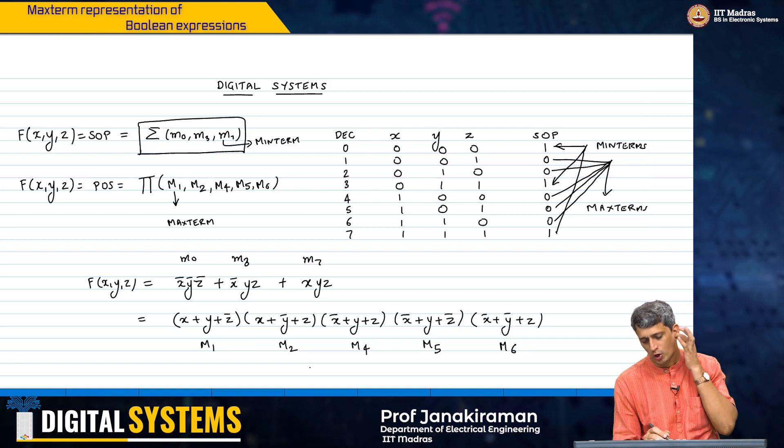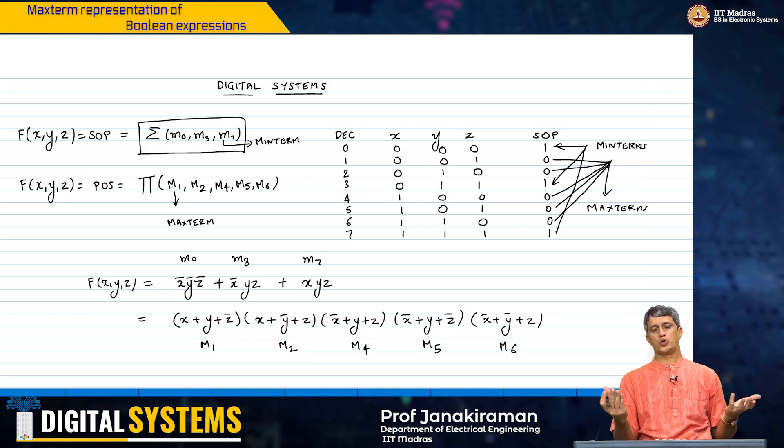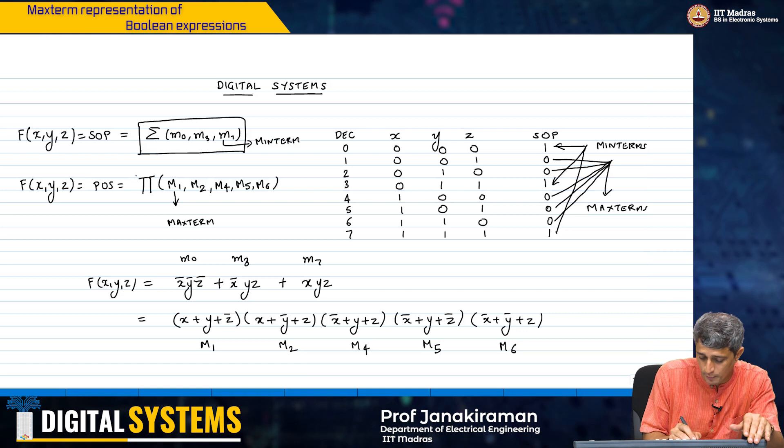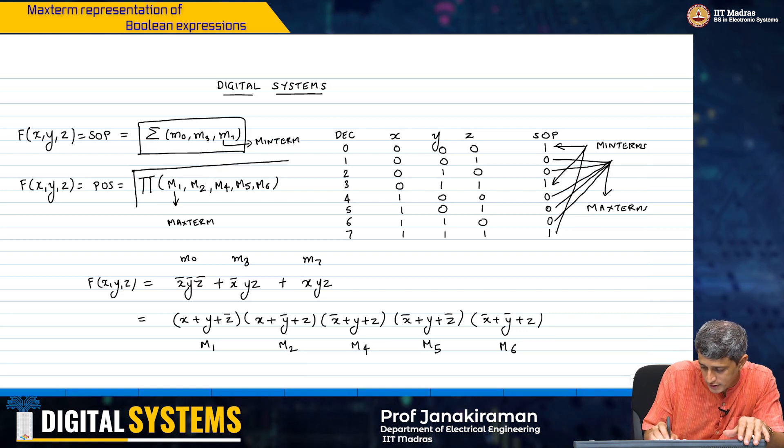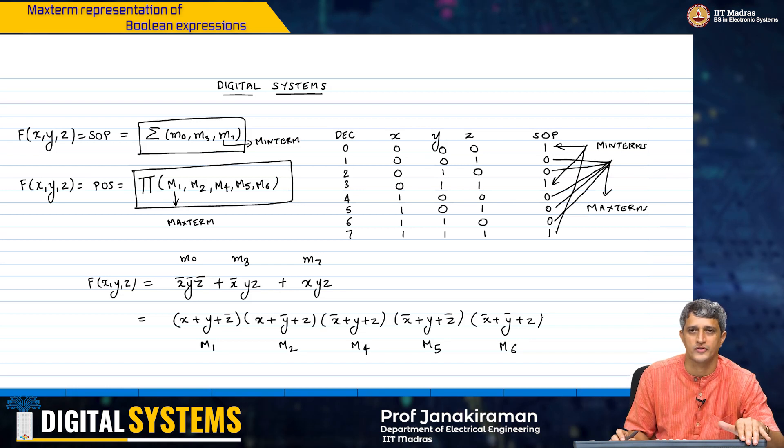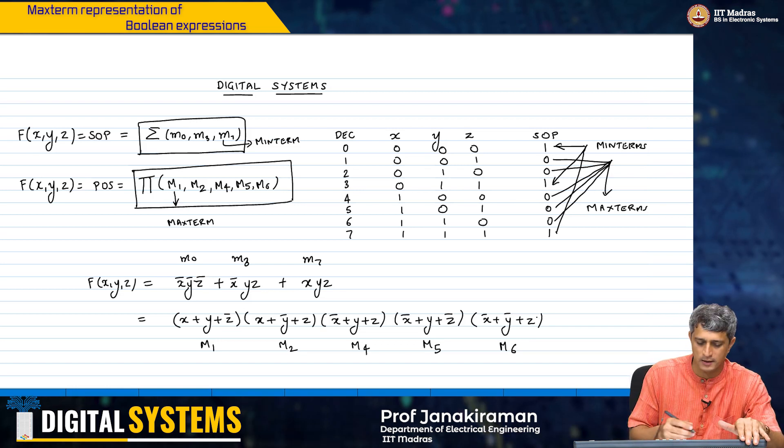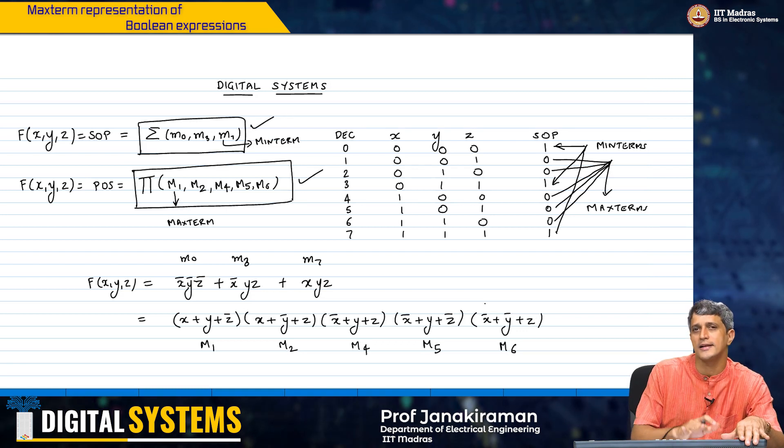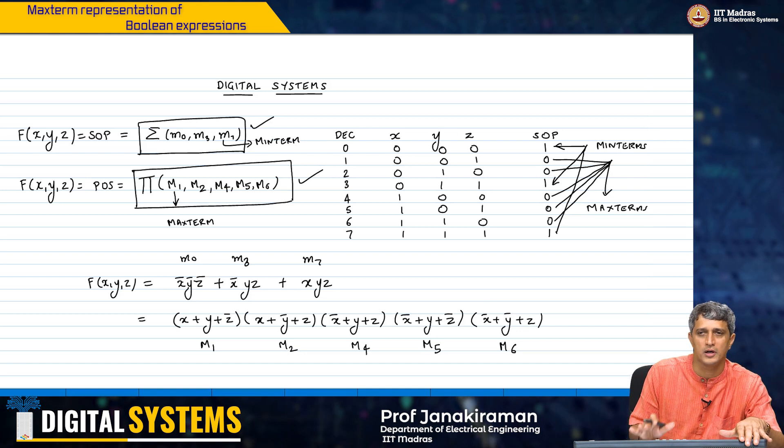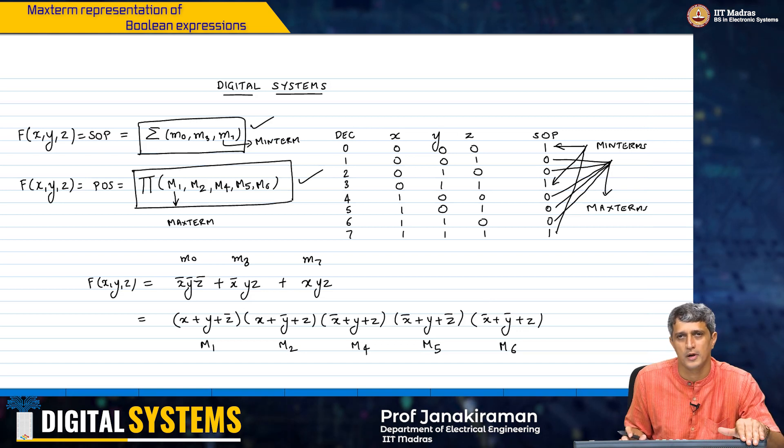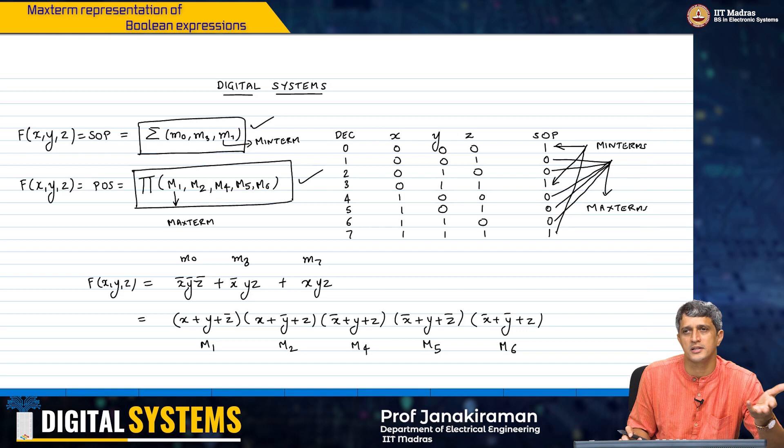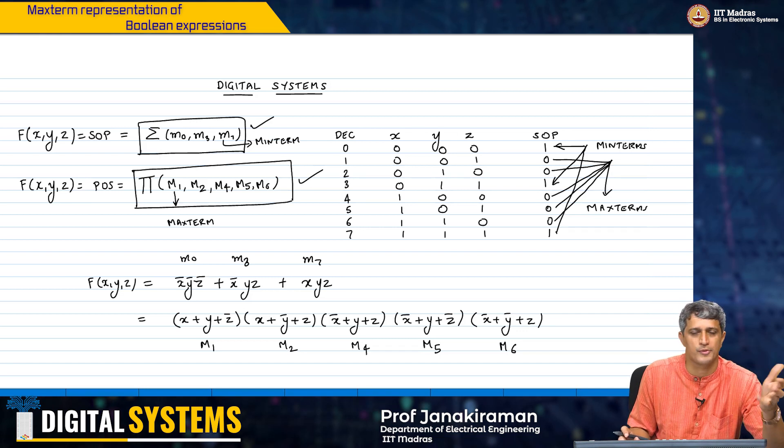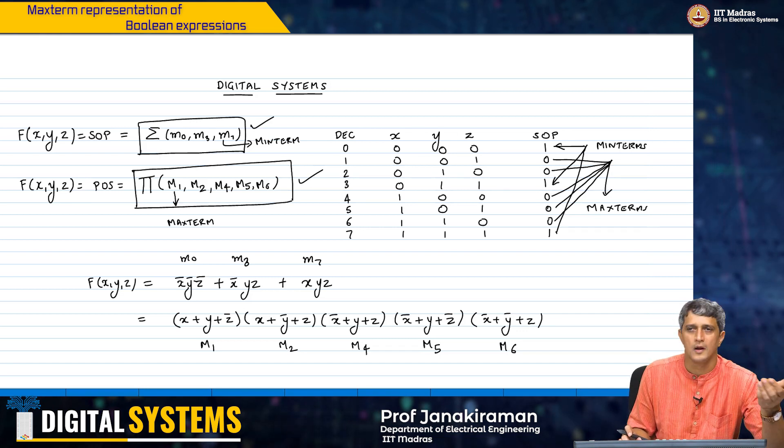Effectively what you have now is two standard canonical representations for the same function either as a sum of product or a product of sum and it can be represented very compactly in this notation and it has a one to one mapping with a truth table. We will be using this notation and using this representation quite extensively going forward.